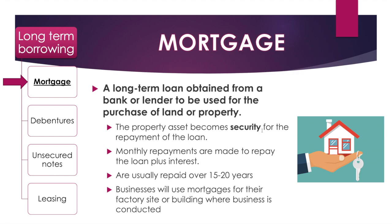If you default on the loan, then the lender who has given you the money has the right to take that security as payment of the loan. Usually there are monthly repayments that need to be made on the mortgage, including the principal amount of the loan plus interest. For businesses, mortgages are paid over 15 to 20 years — that time period extends for individuals and households, but for businesses it's around 15 to 20 years.